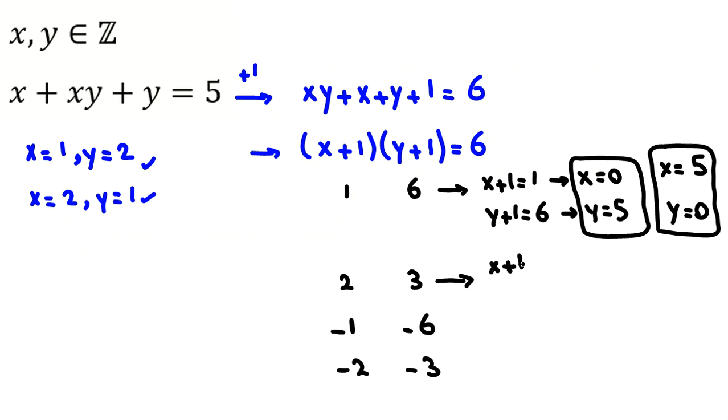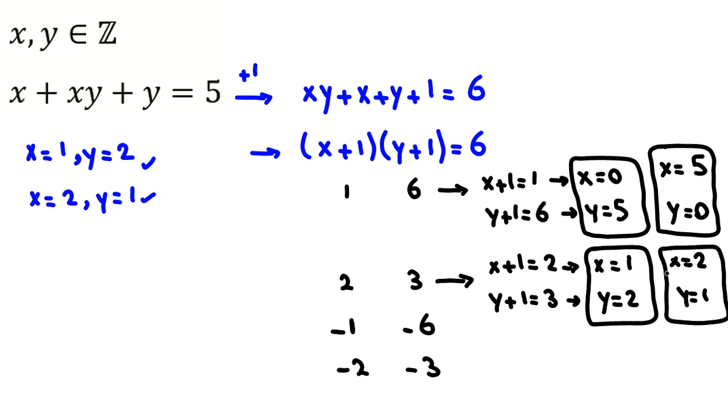So 2, x plus 1 equal to 2, y plus 1 equal to 3. So from this one, x equal to 1, if you take 1 to right side. From this one, 1 to right side, 3 minus 1 is 2. So 1, 2 is exactly the answer here. x also 2, y, 1, we switch.